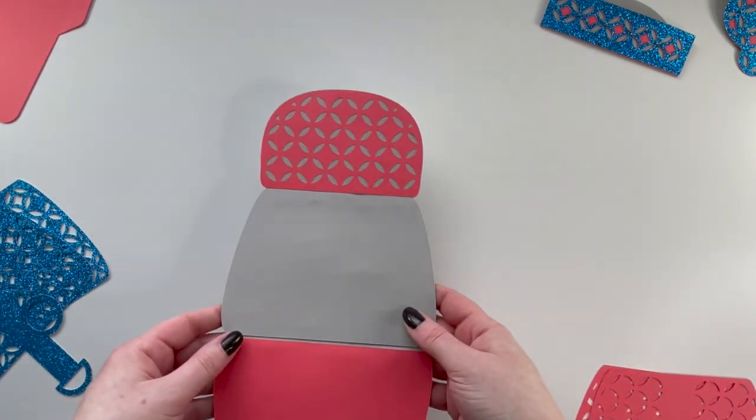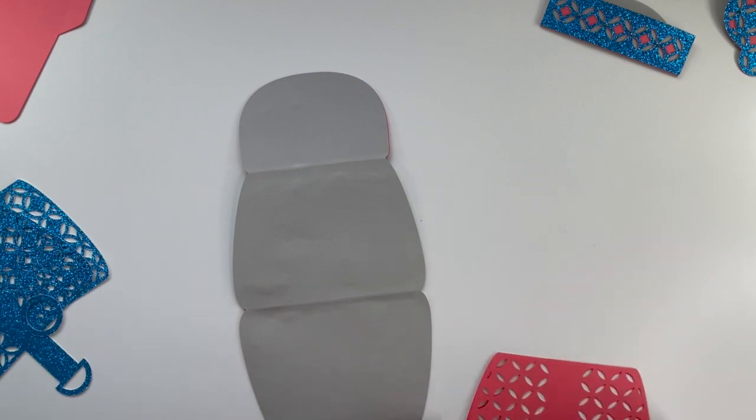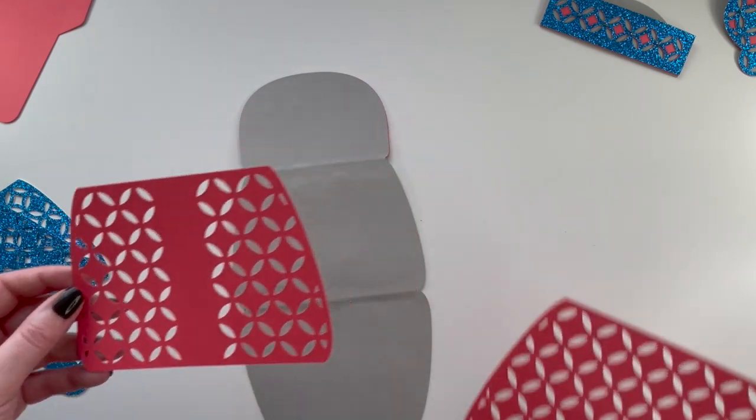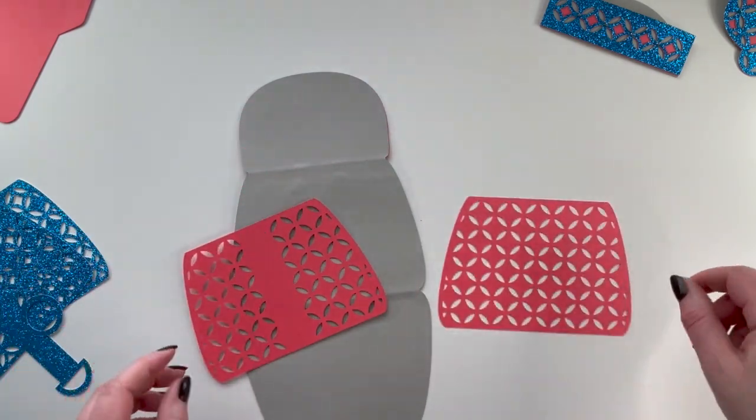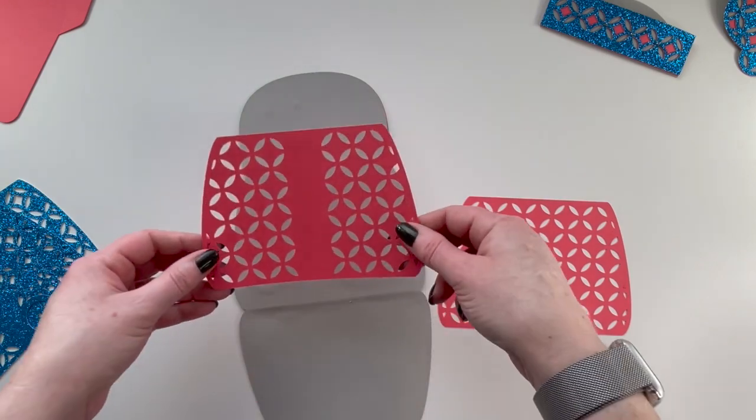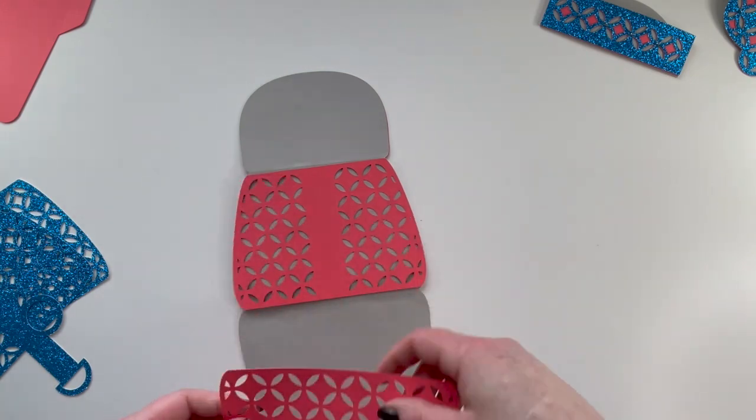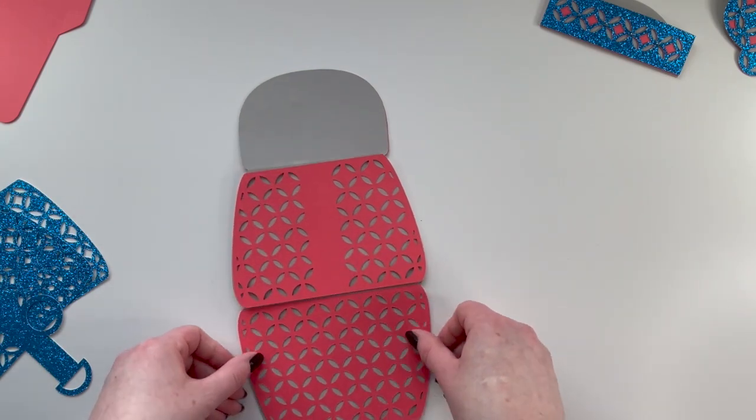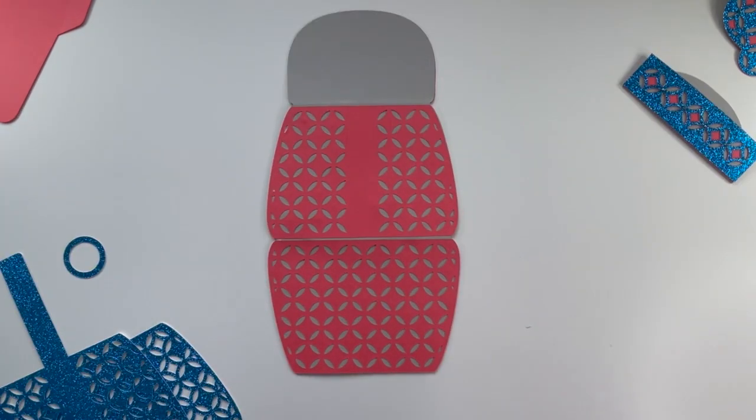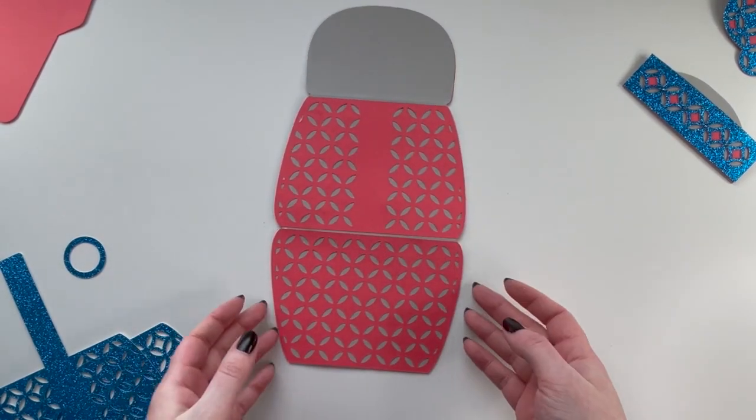Okay, while those dry, take your main part of your card, flip it over, and you've got two red pieces. As you can see here, that one goes there. Okay, so the back of your card should look like that.